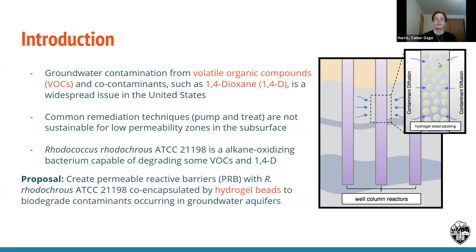A common widespread issue in the United States is groundwater contamination from volatile organic compounds known as VOCs and co-contaminants such as 1,4-dioxane. In low permeability zones in the subsurface, common remediation techniques such as pump and treat are not sustainable. A bacteria strain, Rhodococcus rhodochrous ATCC-21198, is an alkane oxidizing bacterium capable of degrading some VOCs and 1,4-dioxane. Our proposal is to create permeable reactive barriers with Rhodococcus rhodochrous co-encapsulated by hydrogel beads to biodegrade contaminants occurring in groundwater aquifers, as shown in the figure on the right.